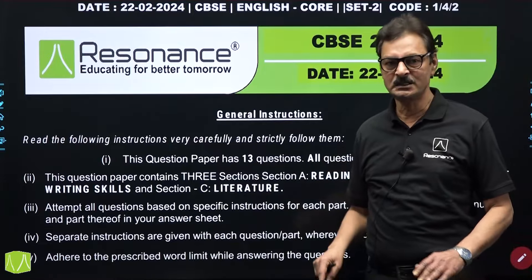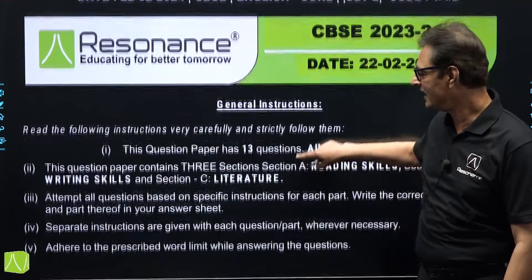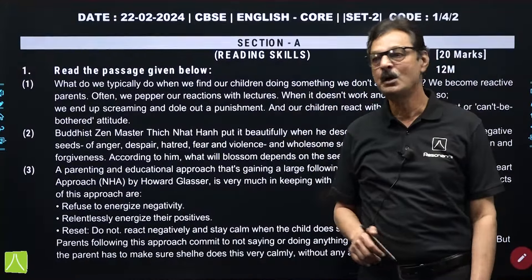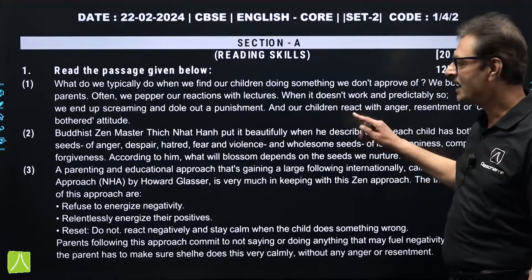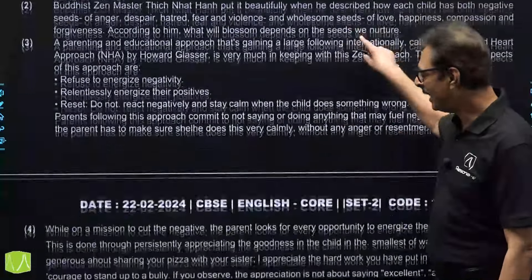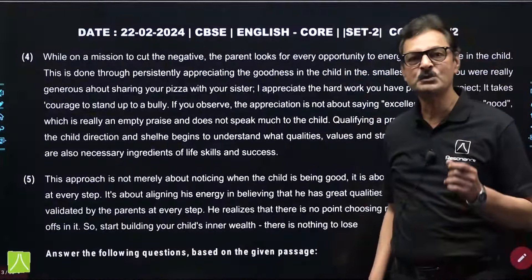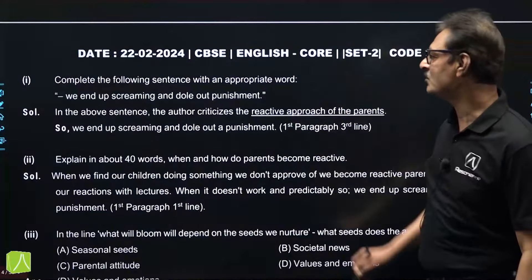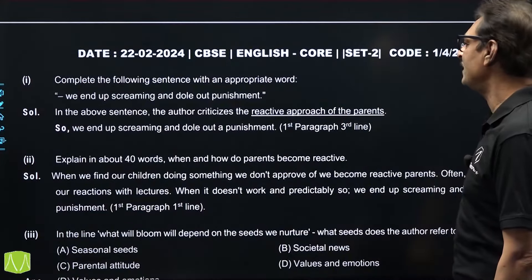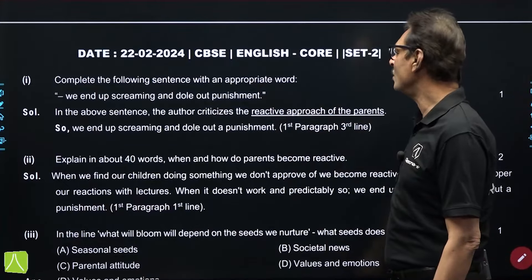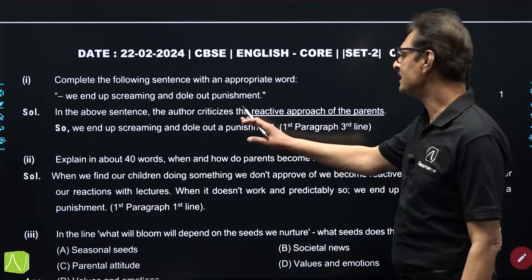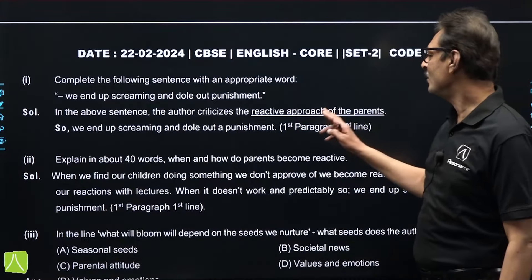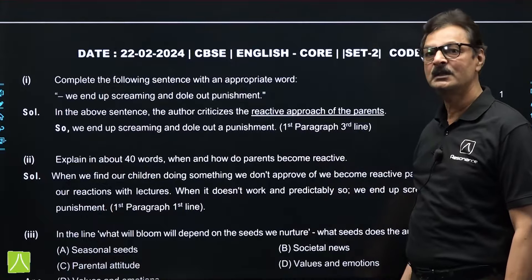The general instructions were there and three sections were there in the paper. Moving on to the first passage, the first passage in the reading section was based on parenting. A straightforward easy passage it was, but a few questions were a bit tricky. So we will go with the detailed solution. The first question: complete the following sentence — 'and we end up screaming and dole out punishment.' The author criticizes the reactive approach of parents and you can find this answer in the first paragraph, third line.